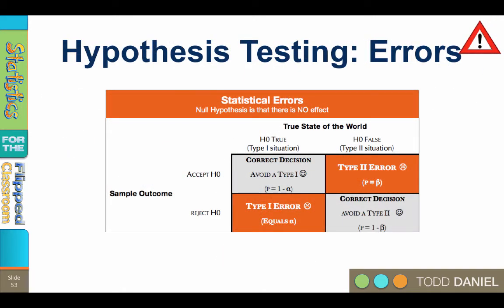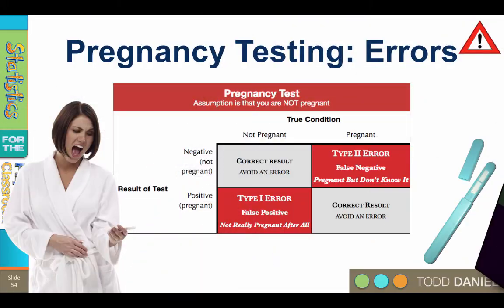I could explain this with a 2x2 matrix in which we consider the true state of the world against the outcome from our sample and determine if we've made a correct decision or an error, but I find that at the beginning this is a little too complex, so I'd like to start with a more accessible example. To illustrate errors in decision making, let's consider the example of pregnancy testing. At any given time, most women in the world are not pregnant, so that is going to be our null hypothesis.